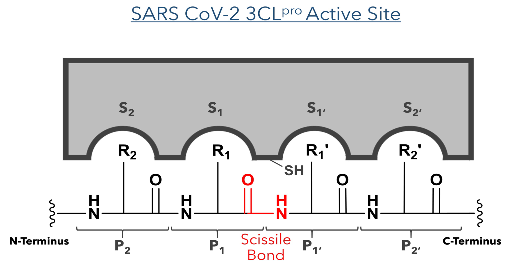Going to the N terminus, the P1 peptide will bind to the S1 subunit. And going to the C terminus, the P1' peptide will bind to the S1' subsite of the active site of the enzyme.